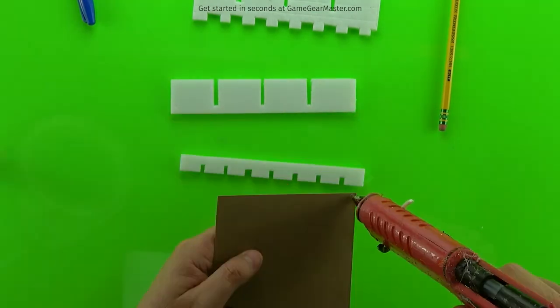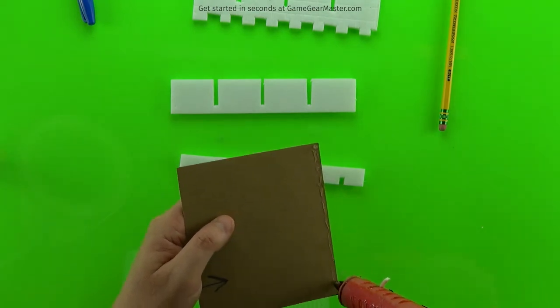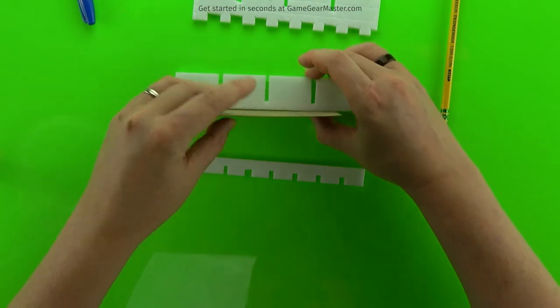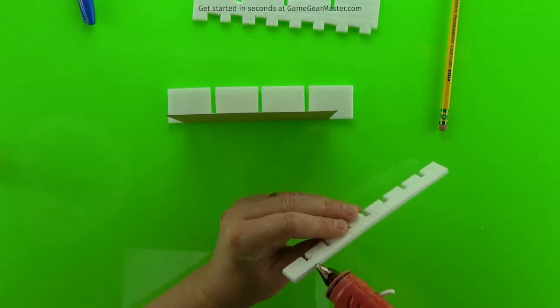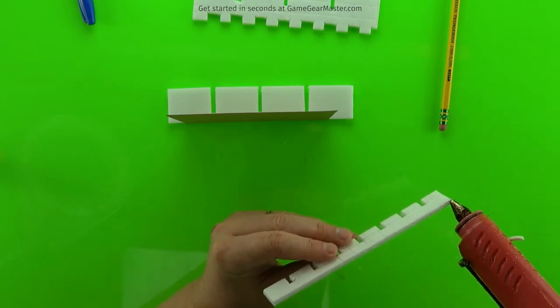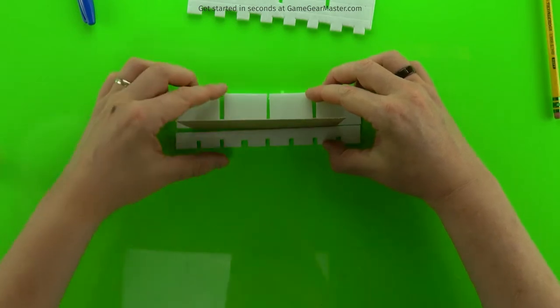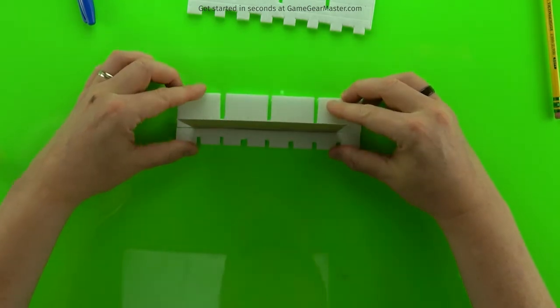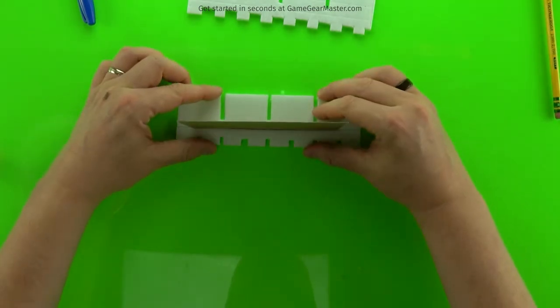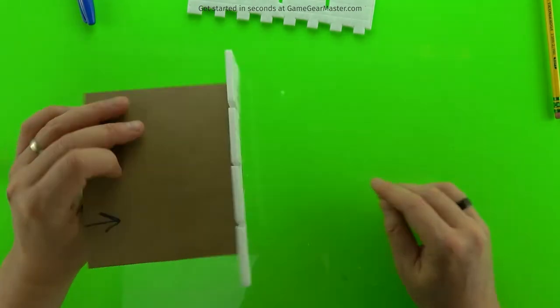Then put a little bead of hot glue and we're going to glue on that first piece with the texture facing down on the work surface. And the same thing with the second piece. We're using our work surface to align the edge of the cardboard to the edge of those two foam pieces.